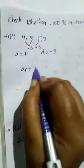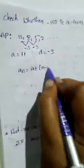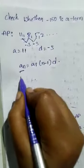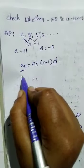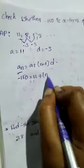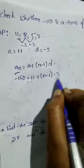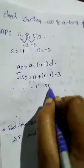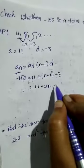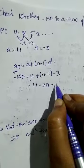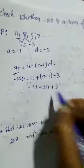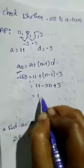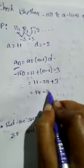We know the formula: An equals A plus n minus 1 into D. An is minus 150, A is 11, we don't know n, D is minus 3. So 11 plus minus 3n, minus 1 into minus 3 gives plus 3. 11 plus 3 equals 14, minus 3n.